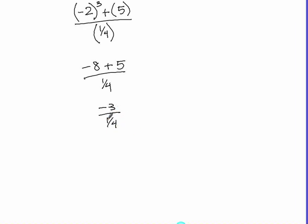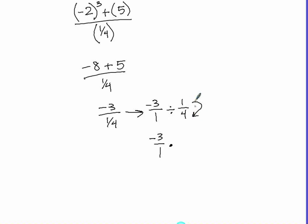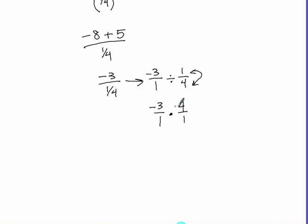Negative eight plus five gives us negative three, divided by one-fourth. When we have something divided by a fraction, it's the same as multiplying by its reciprocal. So we rewrite this as negative three over one divided by one over four, then multiply by the reciprocal: negative three over one times four over one, which gives us negative twelve over one — just negative twelve.